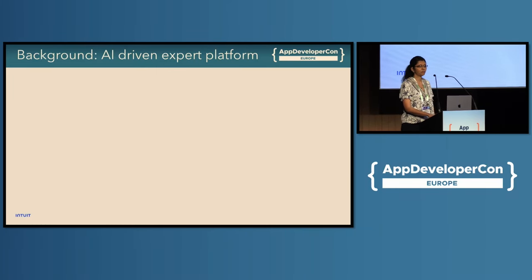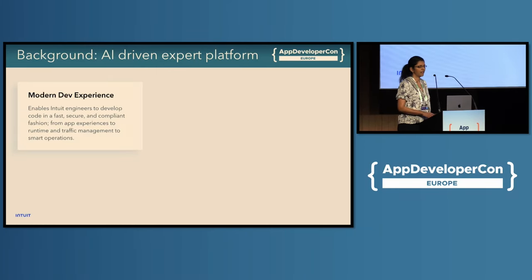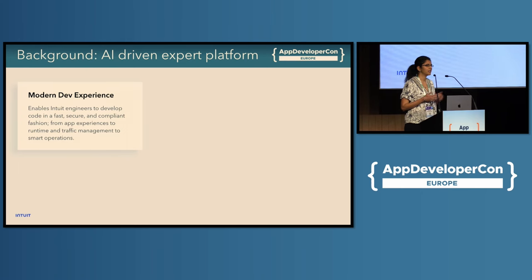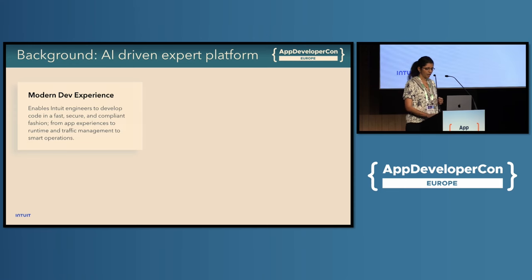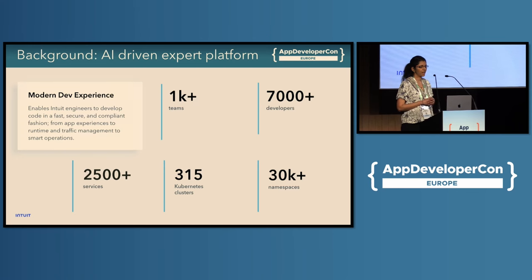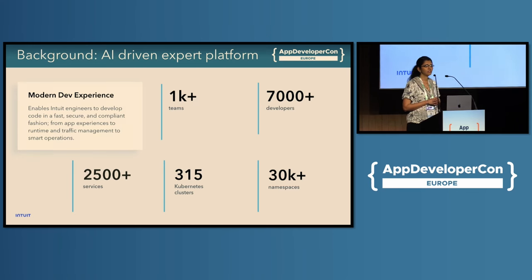Intuit is a global fintech company that builds several financial products and services. If you have ever used QuickBooks for accounting and payroll or TurboTax for tax prep, know that it's actually running on our Kubernetes-based platform infrastructure. Here are some numbers to show the scale at which we operate. We serve about 7,000 internal application developers, and all of them run various different things on Kubernetes.